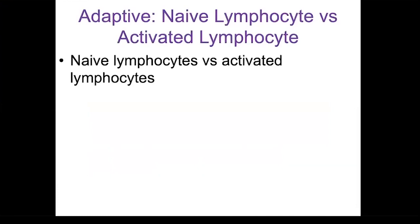Once a T cell has undergone the maturation process and before it encounters its antigen, it will be called a naive lymphocyte. A naive lymphocyte is one that has not encountered and been activated by its antigen. You have many naive lymphocytes in your body right now, and you will probably die with naive lymphocytes because you won't be exposed to all the antigens for which you have lymphocytes.